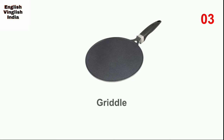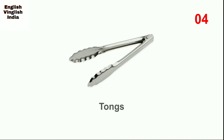Next, griddle. A griddle has a smooth and flat surface. After flattening the dough ball, we bake it on the griddle until it cooks slightly, and then put it on direct flame until it puffs.